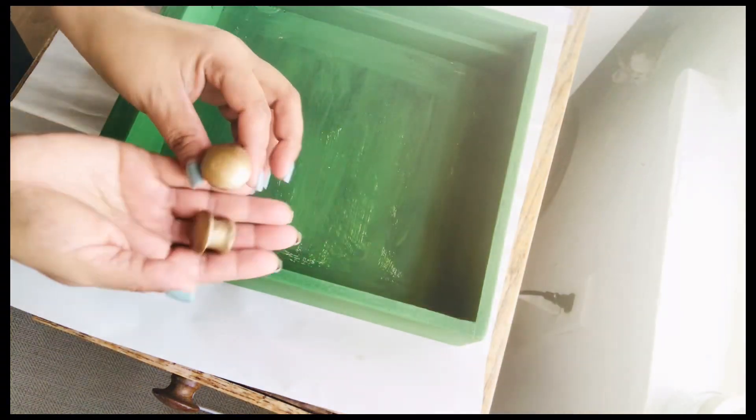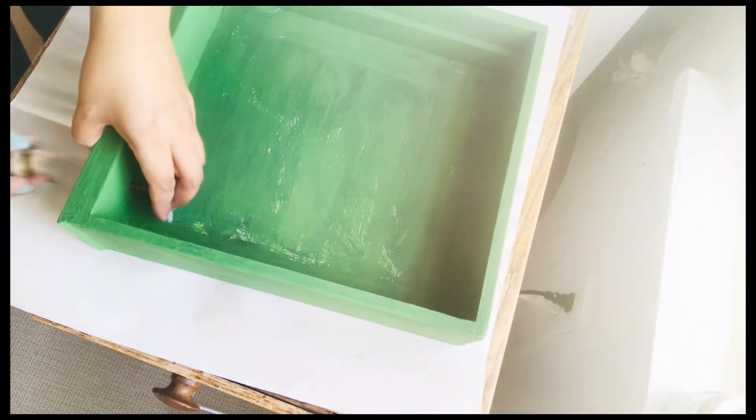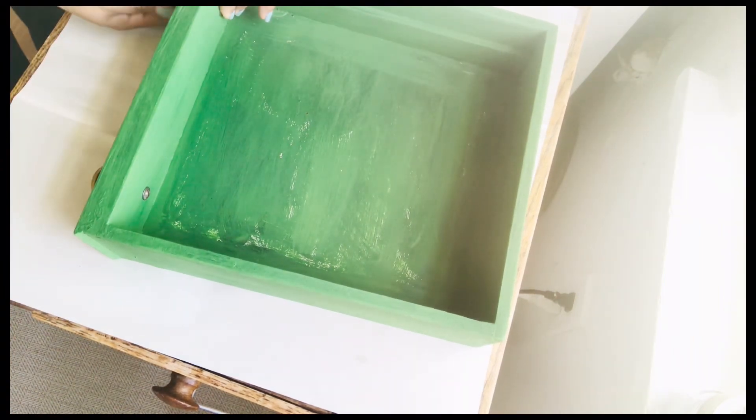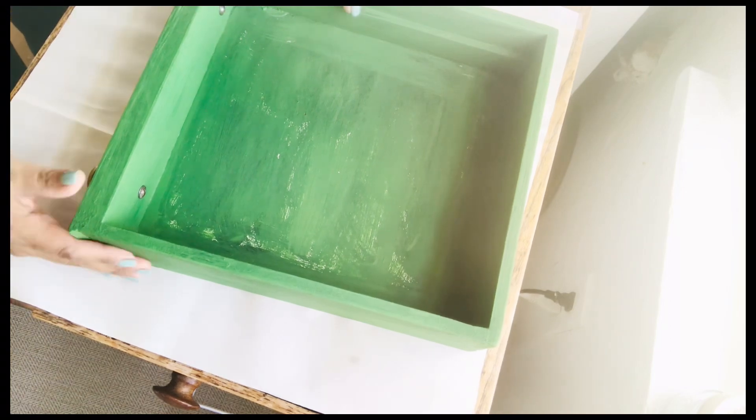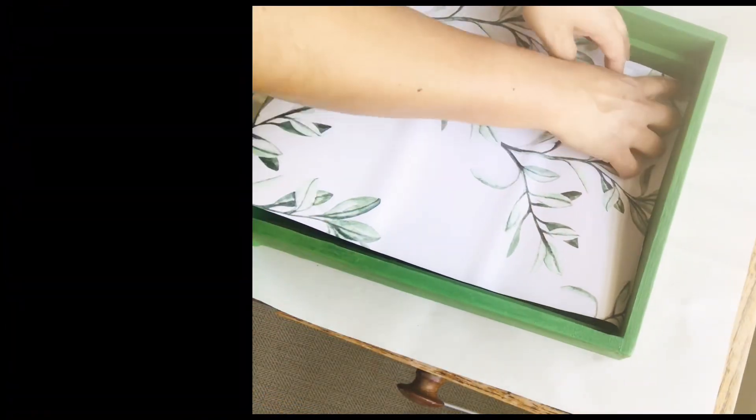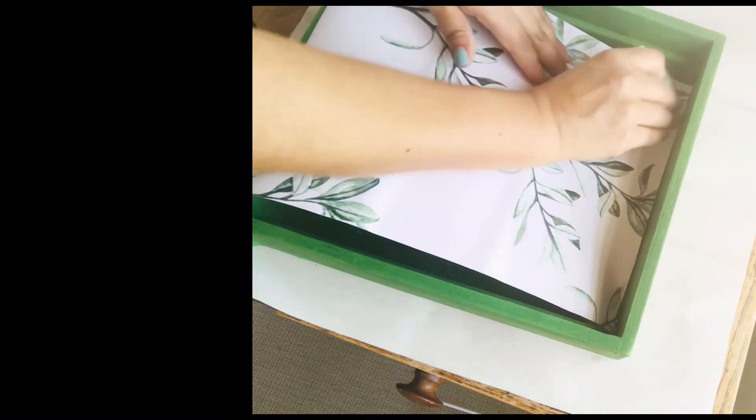Now that the drawer is dry I'm going to add the knobs I painted in gold. Now I'm going to add inside a little piece of this beautiful wallpaper that I got from Amazon.